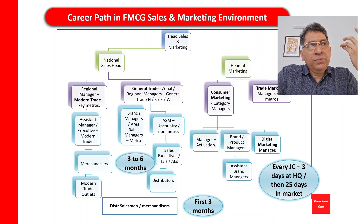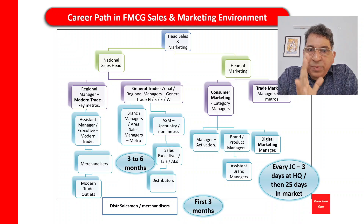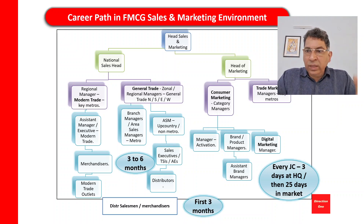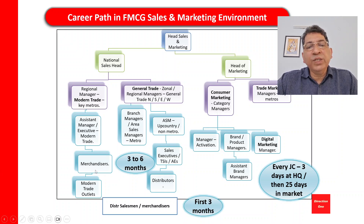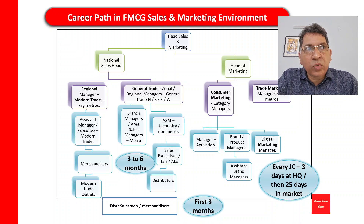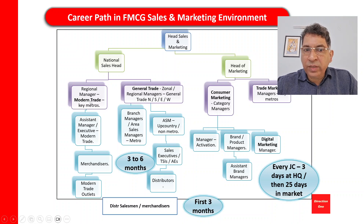On the modern trade side, there are far fewer outlets, so you don't need as many people. The key concept is the key account manager. A key account manager handles a particular chain — for example, Reliance Retail key account manager for western India. There might be two or three people handling Reliance Retail across the country and two or three handling DMart. These key account managers have merchandisers working with them who handle individual DMart outlets — one merchandiser responsible for activities across 8 to 10 outlets in a particular geographical area.